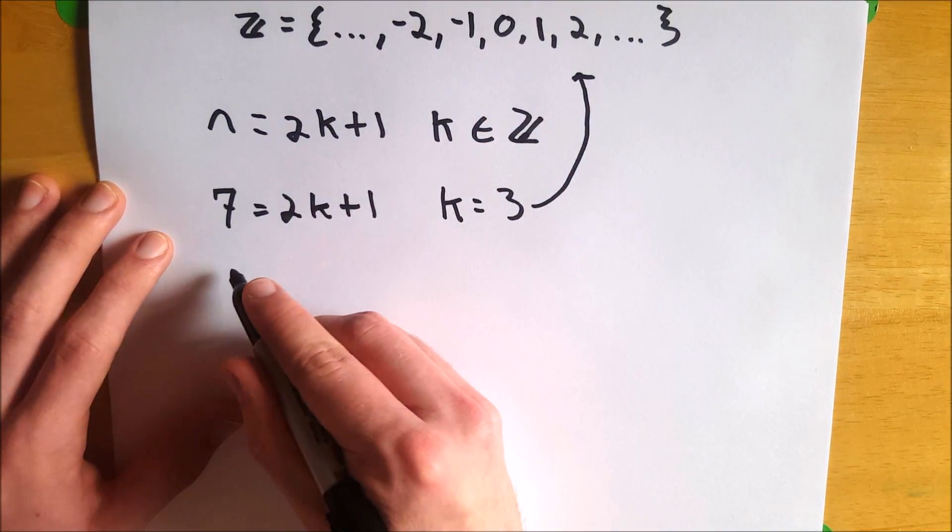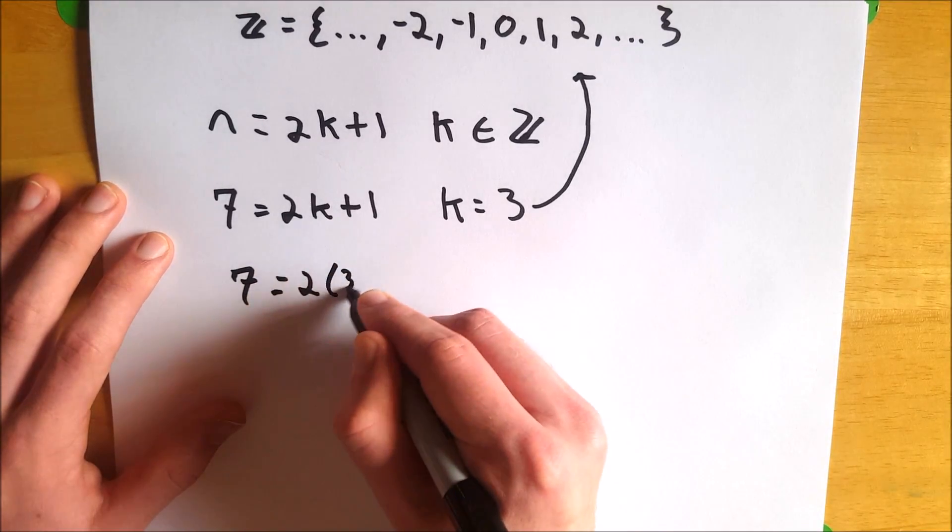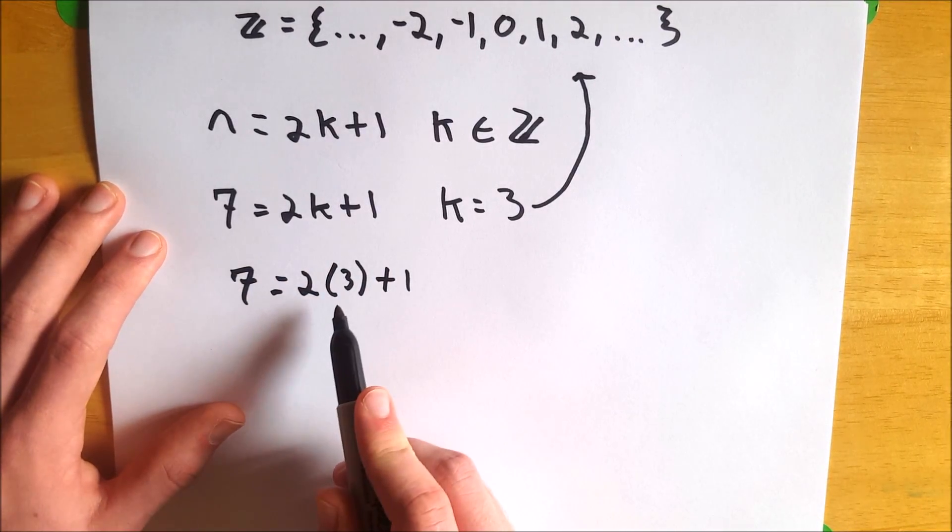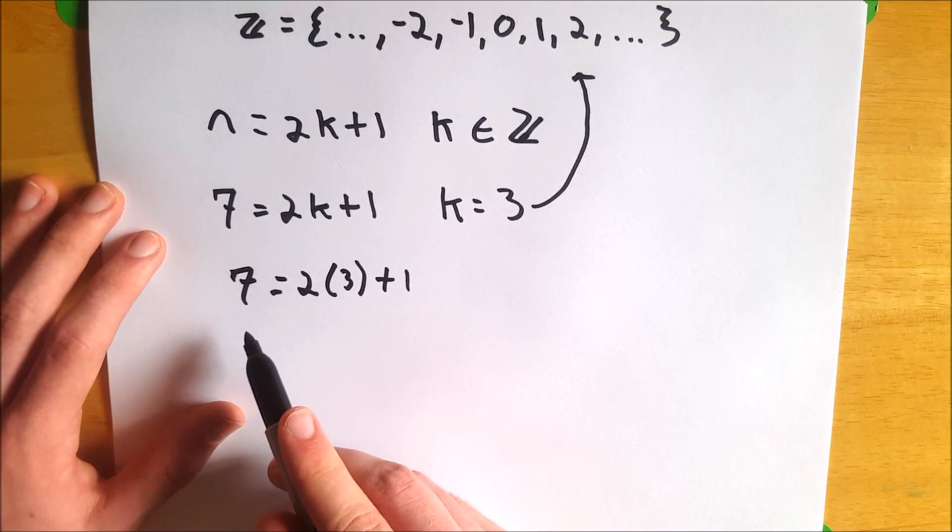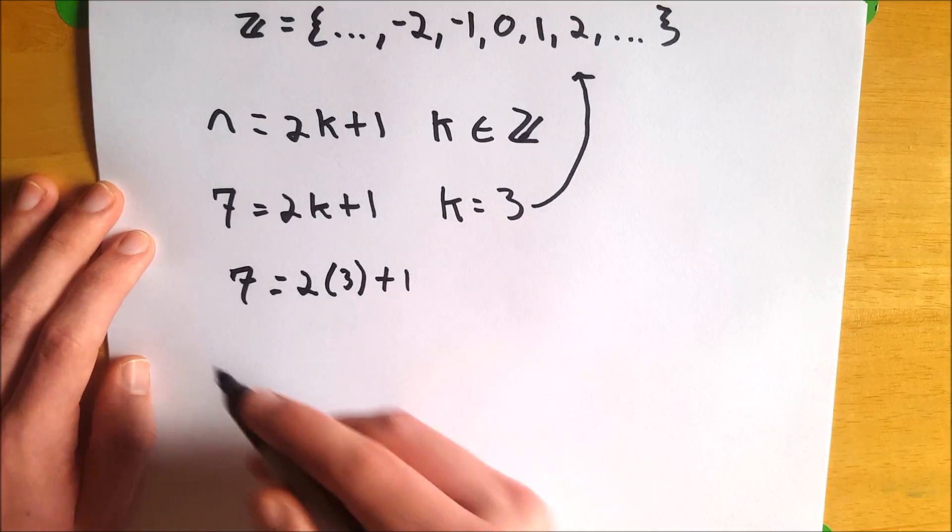So let's write that out. 7 equals 2 times 3 plus 1. You can see that is true. 2 times 3 equals 6 plus 1 is 7. Therefore, 7 does indeed fit the definition of an odd number.